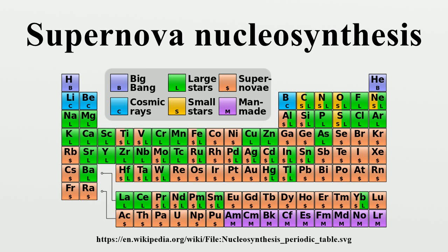Elements heavier than nickel are created primarily by a rapid capture of neutrons in a process called the R-process. However, these are much less abundant than the primary chemical elements. Other processes thought to be responsible for some of the nucleosynthesis of under-abundant heavy elements include notably a proton capture process known as the RP-process and a photodisintegration process known as the gamma-process. The latter synthesizes the lightest, most neutron-poor isotopes of the heavy elements.